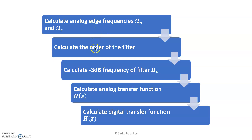The second step is to calculate the order of the filter. To find H(S), the transfer function of the analog filter, we need two parameters: the order of the filter and the minus 3 dB cutoff frequency. The third step is to calculate the minus 3 dB cutoff frequency ΩC. Once we have designed the analog transfer function, the next step is to convert it into the digital transfer function using the transformation technique — here we are using BLT, Bilinear Transformation.